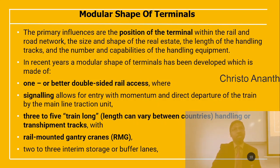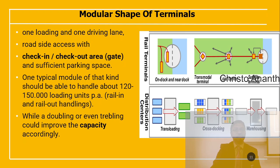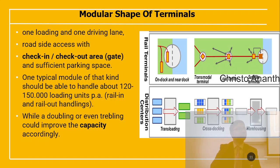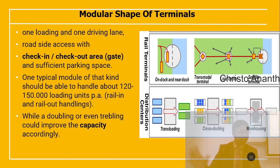Terminals also feature one loading and one driving lane road-line access with a check-in/check-out area and sufficient parking space. One example of this modular terminal design handles about 120,000 to 150,000 loading units for rail-in and rail-out handlings. We have rail terminal types including on-dock, near-dock, transmodal terminal, and load center satellite terminal, as well as distribution centers such as transloading, cross-docking, and warehousing — all utilizing spacious parking space.